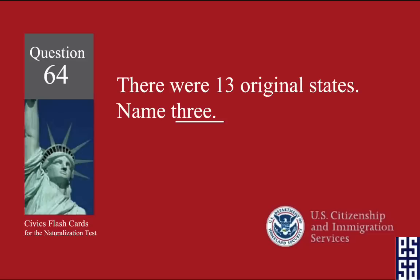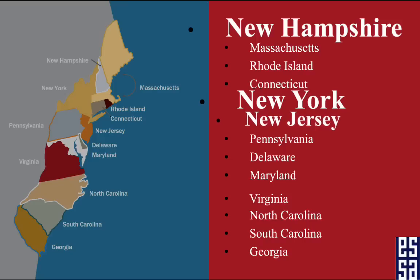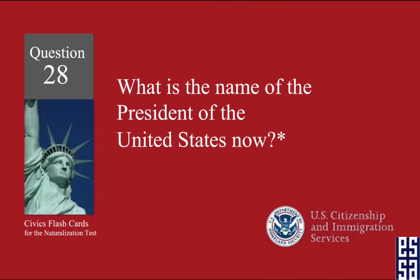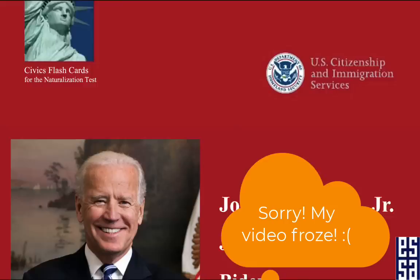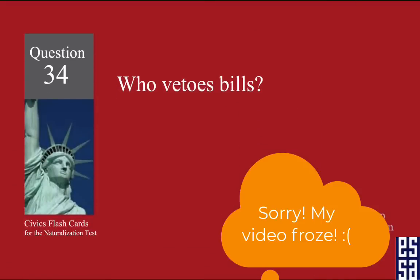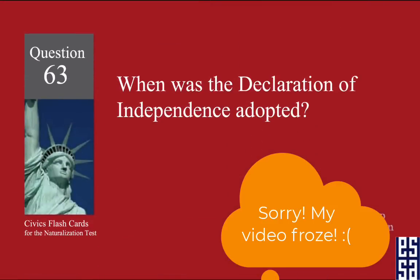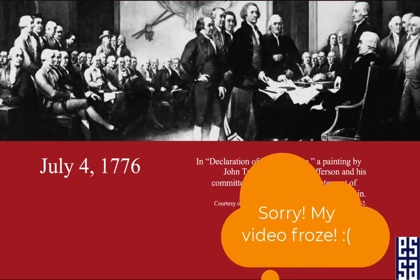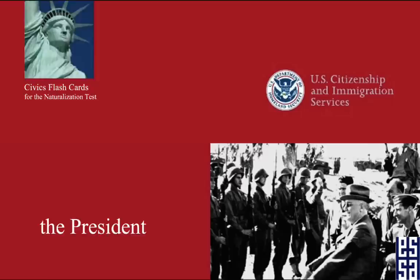There were 13 original states. Name three. New Hampshire, New York, New Jersey. What is the name of the president of the United States now? Joe Biden. Who vetoes bills? The president. When was the Declaration of Independence adopted? July 4th, 1776. Who is the commander-in-chief of the military? The president.